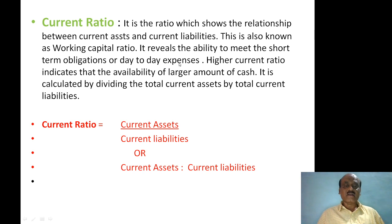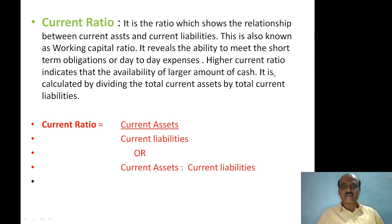If the current ratio is higher — that is, if the current assets are more than the current liabilities — it shows the availability of a larger amount of cash. The current ratio is calculated by dividing total current assets by total current liabilities.